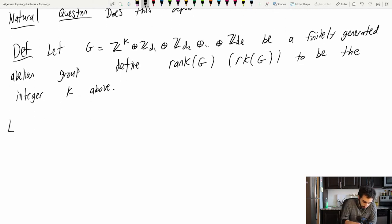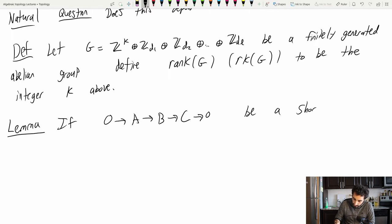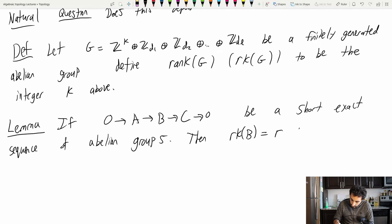Okay, now here's a lemma. The question is, how does rank behave in a short exact sequence? So let's take a short exact sequence. 0 goes to A goes to B goes to C be a short exact sequence of abelian groups.